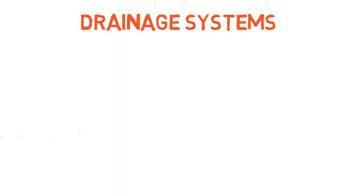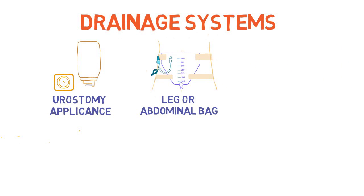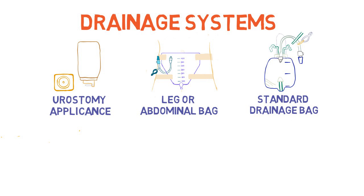Drainage systems: First, there is the urostomy appliance, which has an adhesive portion that covers the stoma and connects to a drainage bag. This is commonly used for nephrostomy tubes, and can sometimes be used with suprapubic catheters to decrease leakage. Often, patients will use a leg bag or abdominal bag, which allows easier mobilization and physical activity during the day. However, these do not function well at night. The traditional urinary drainage bag is 2 liters and is often used for hospitalized patients or as a nighttime bag for patients with long-term indwelling catheters.